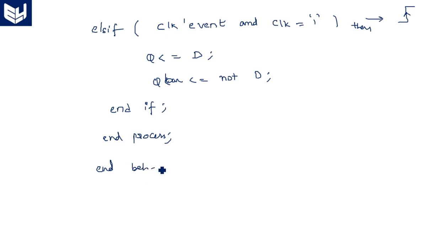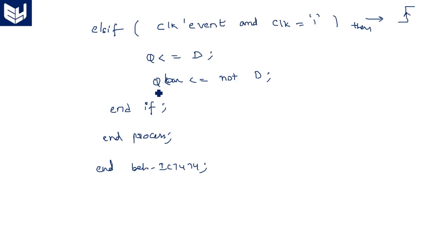End behavioral; end IC_7474. This is the VHDL code in behavioral style for the 7474 IC for one D flip-flop. Thank you.